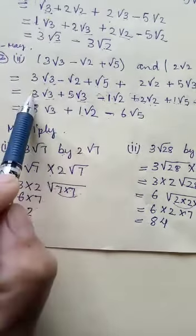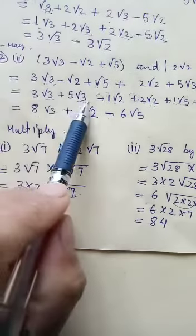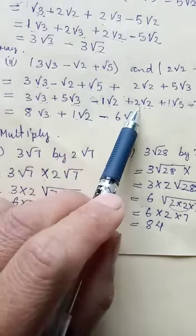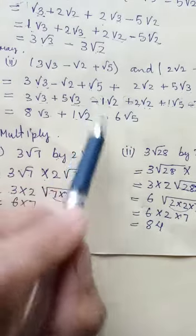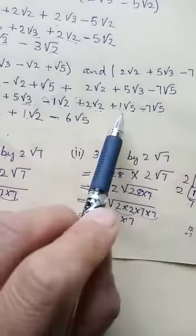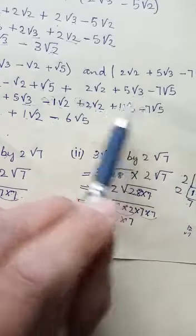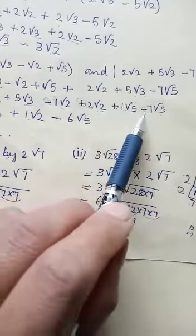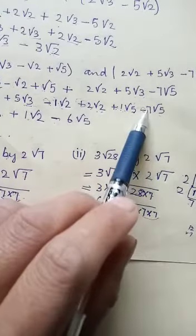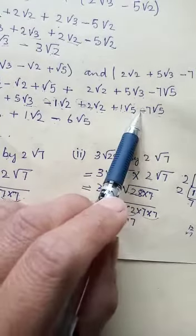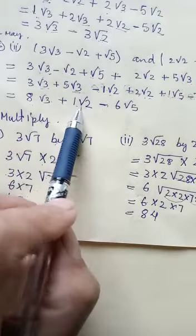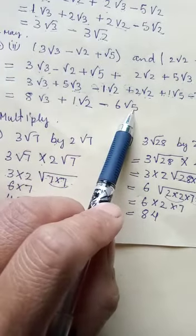This is plus and this is plus, so we add: 5 plus 3 will be 8, and square root 3 remains the same. Here we have plus and minus, so we subtract: 2 minus 1 is 1, and since 2 is greater we write plus. For root 5: one is minus, one is plus — different signs, so we subtract: 7 minus 1 is 6, and since 7 is greater we put minus.